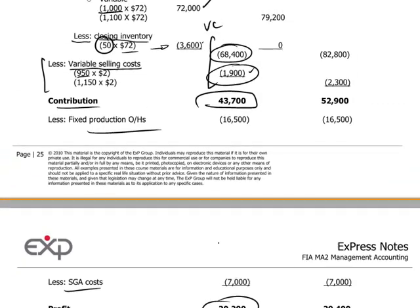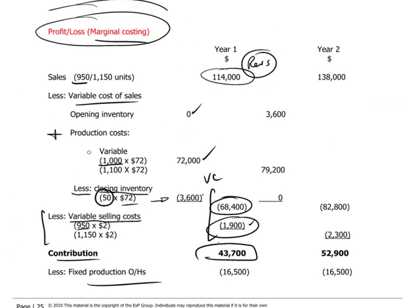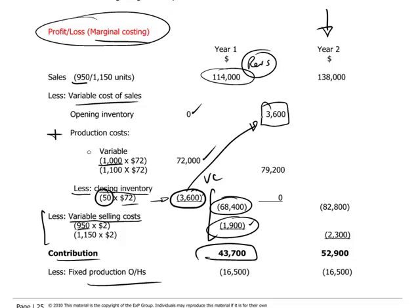We will pause now so that the candidate can work through the data relating to year two to build the profit and loss statement, following the same principles demonstrated for year one. Remember that the closing inventory of 50 units from the end of year one becomes the opening inventory for year two, to which we add variable production costs.